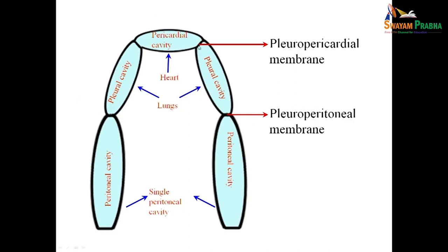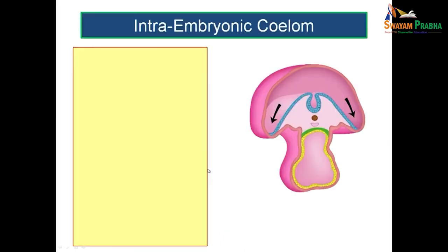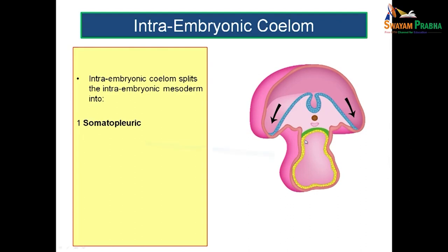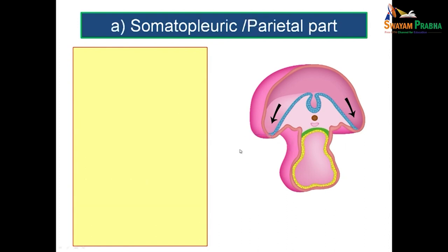If these membranes are not formed, structures from each cavity will herniate to the other. The intraembryonic celome splits the intraembryonic mesoderm into two layers: the somatopleuric layer, lying closer to the ectoderm, and the splanchnopleuric layer, lying closer to the endoderm. Previously the mesoderm was just a band of cells, but the formation of this cavity splits it into these two layers.